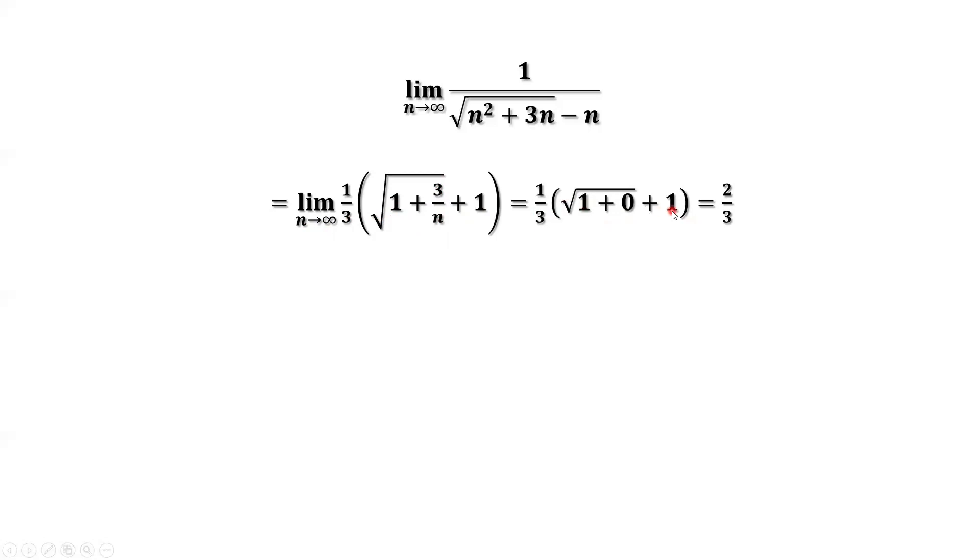Inside the part, that's 1 plus 1, that's 2. 2 over 3. This is the answer. Limit of 1 over square root of n square plus 3n, then minus n as n approaches infinity equals 2 over 3.